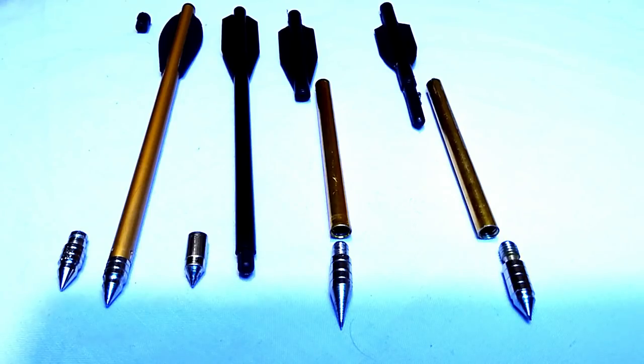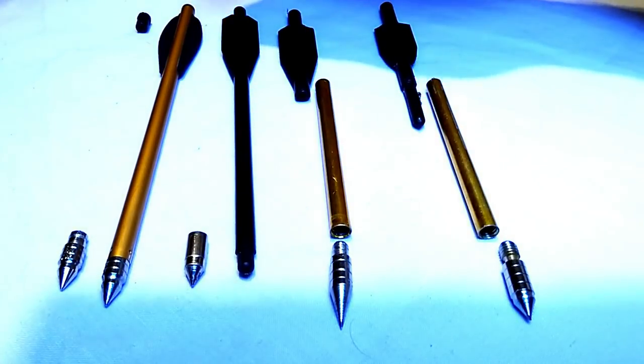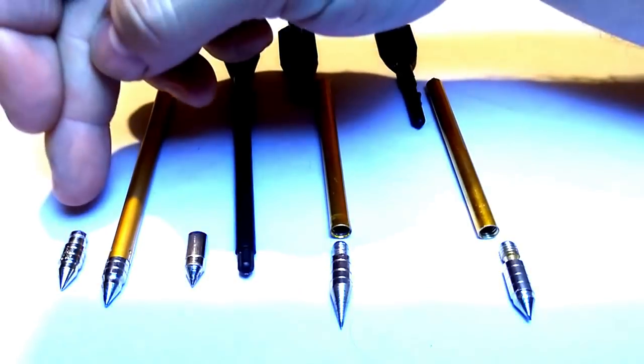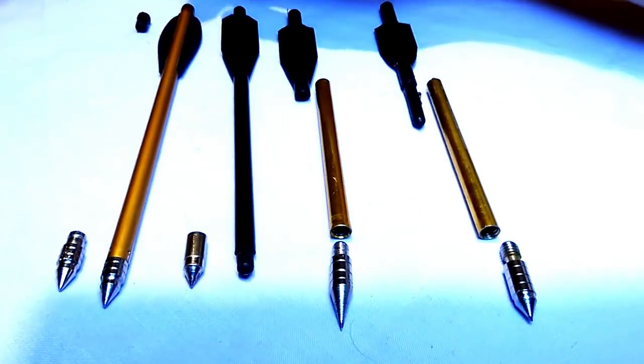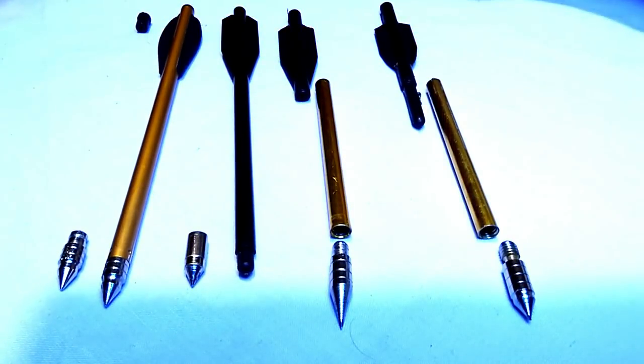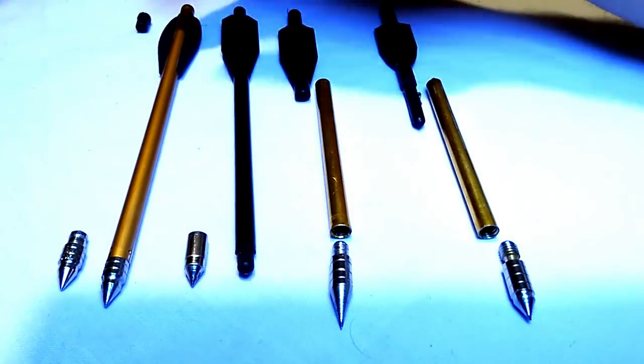Right, so these are the various parts to each bolt. This one I don't have a separate shaft, but it would be aluminum shaft, the tip, the back bit and the two flights. So that's all the parts that could break on that one.